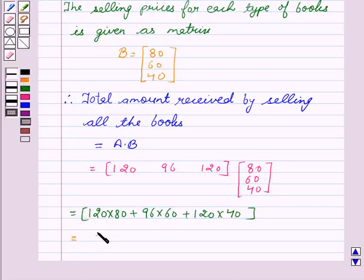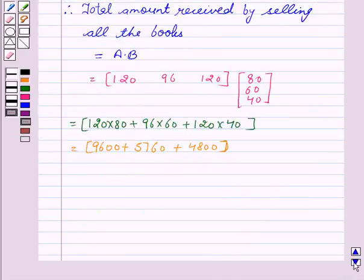This is equal to 9,600 plus 5,760 plus 4,800. This is equal to 20,160.